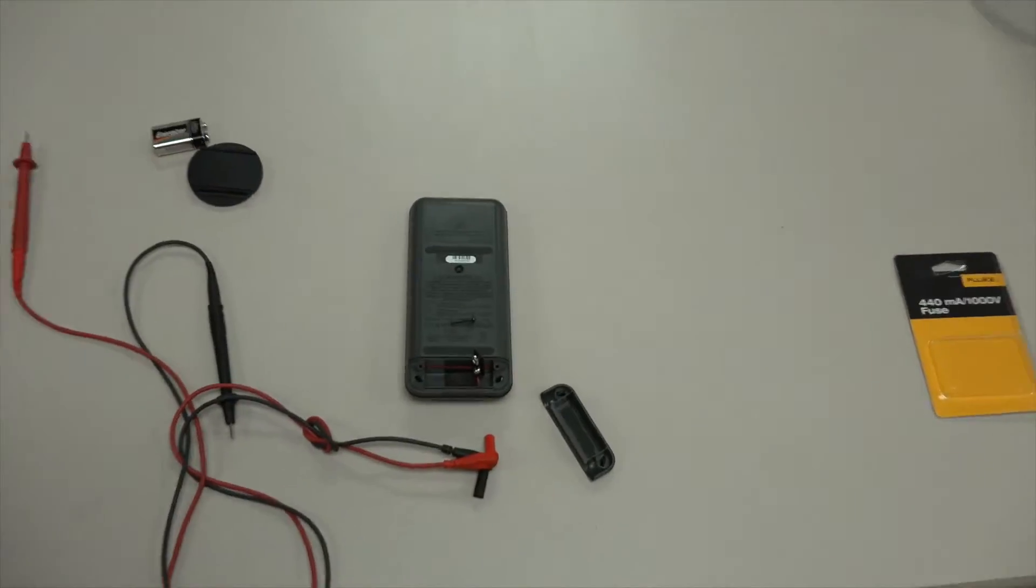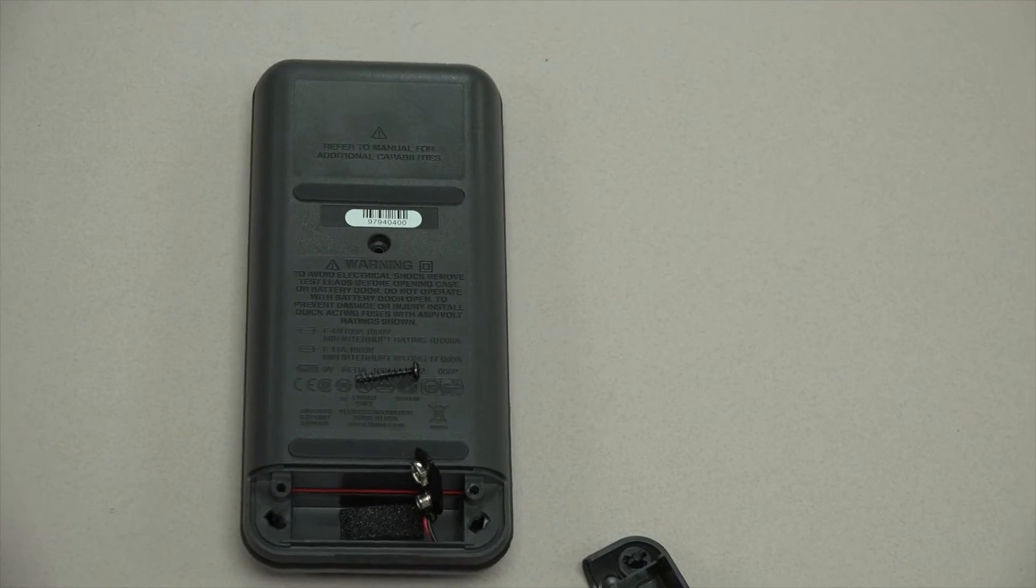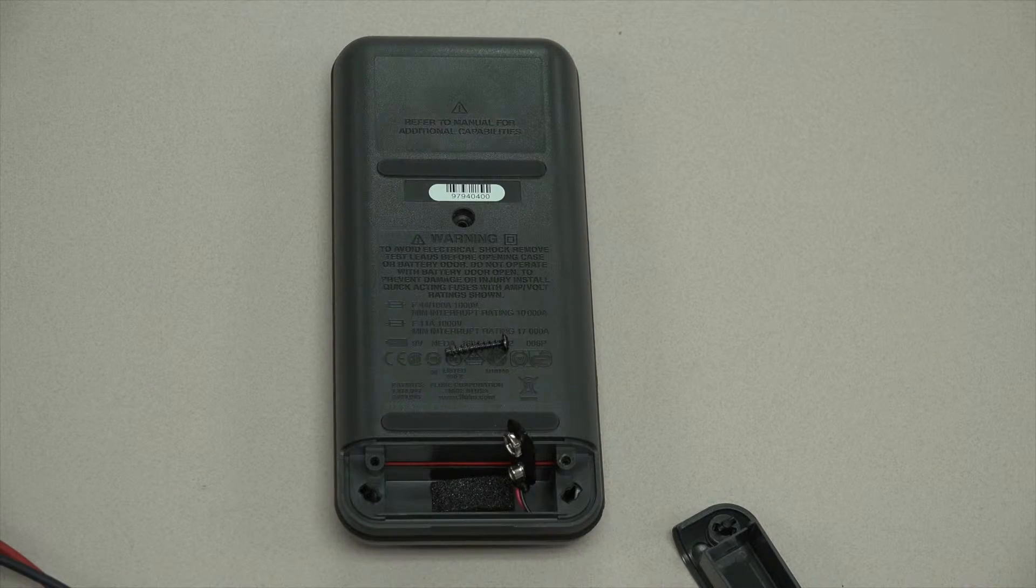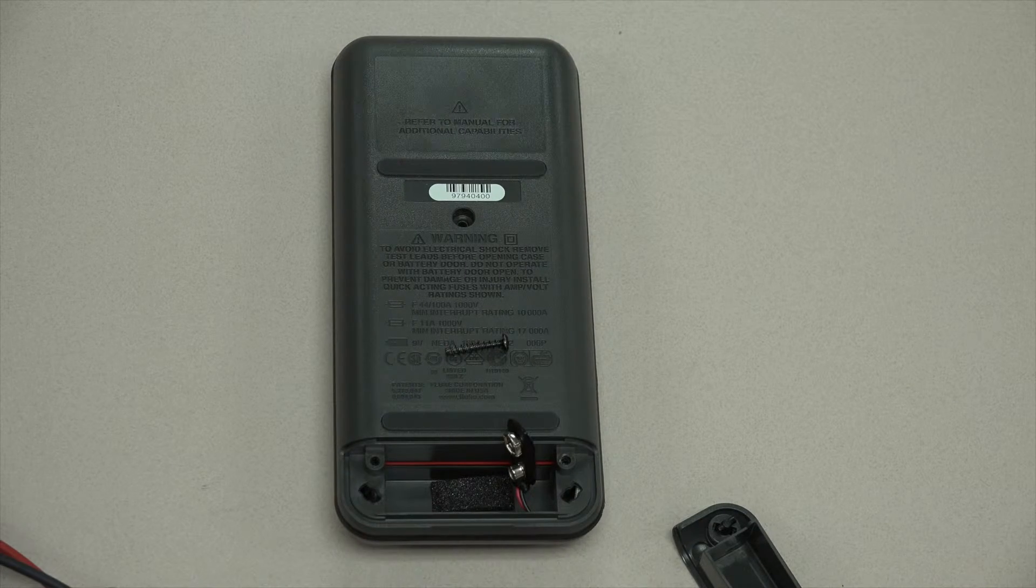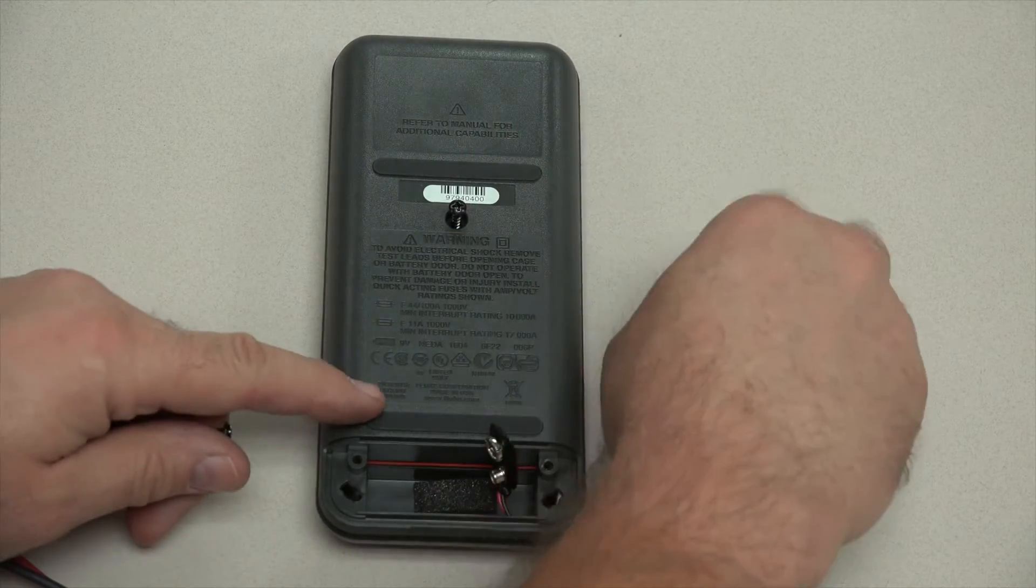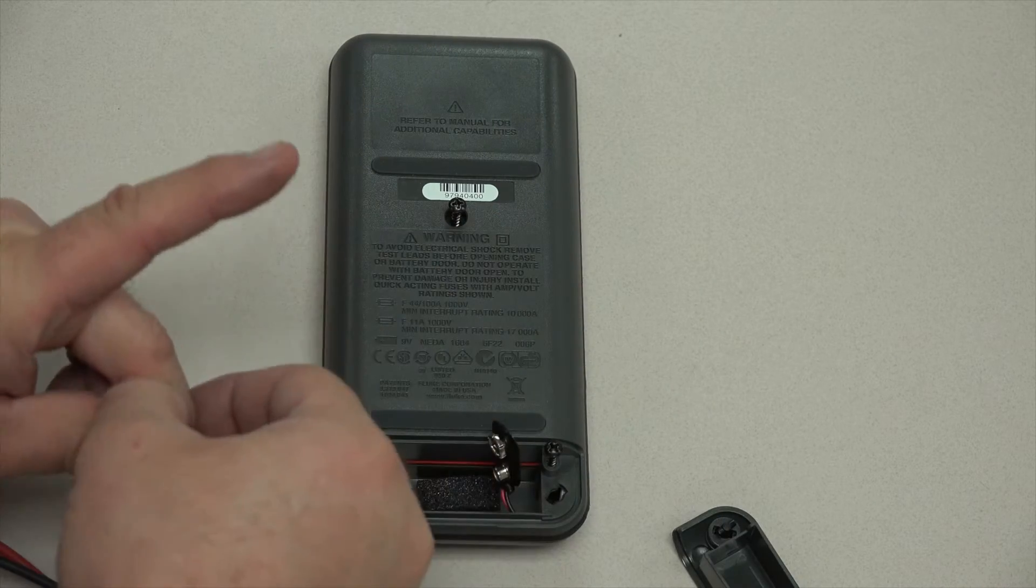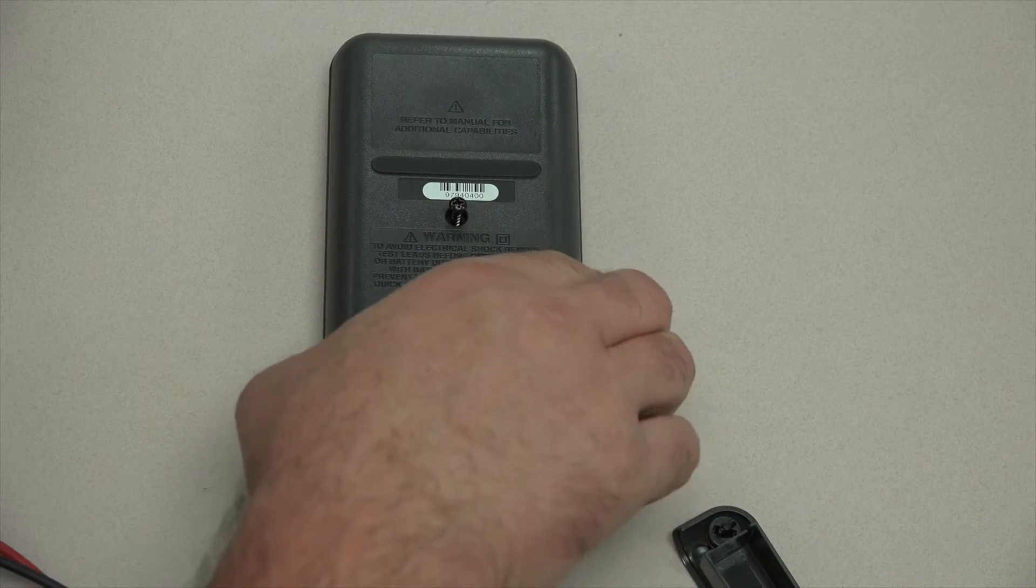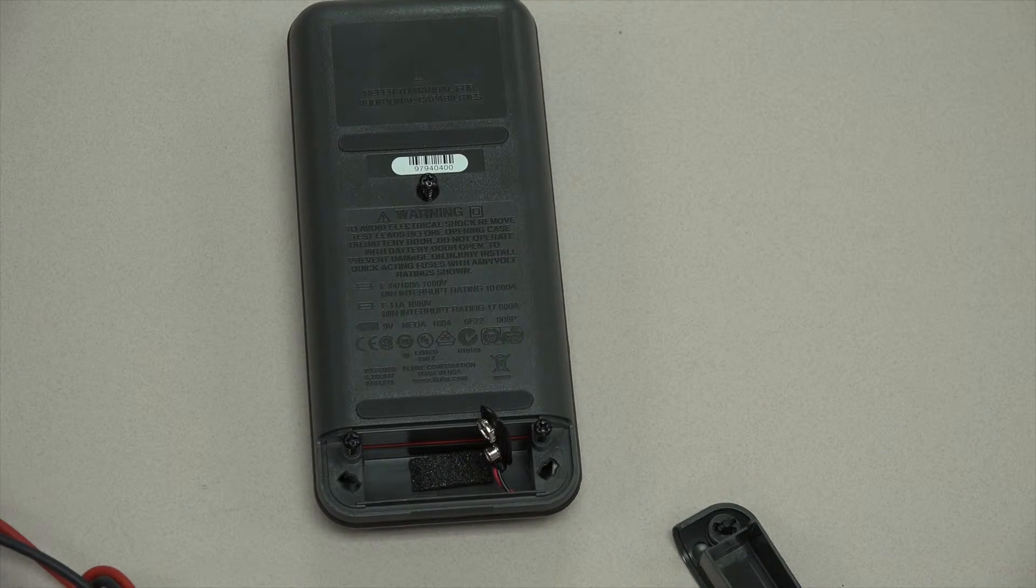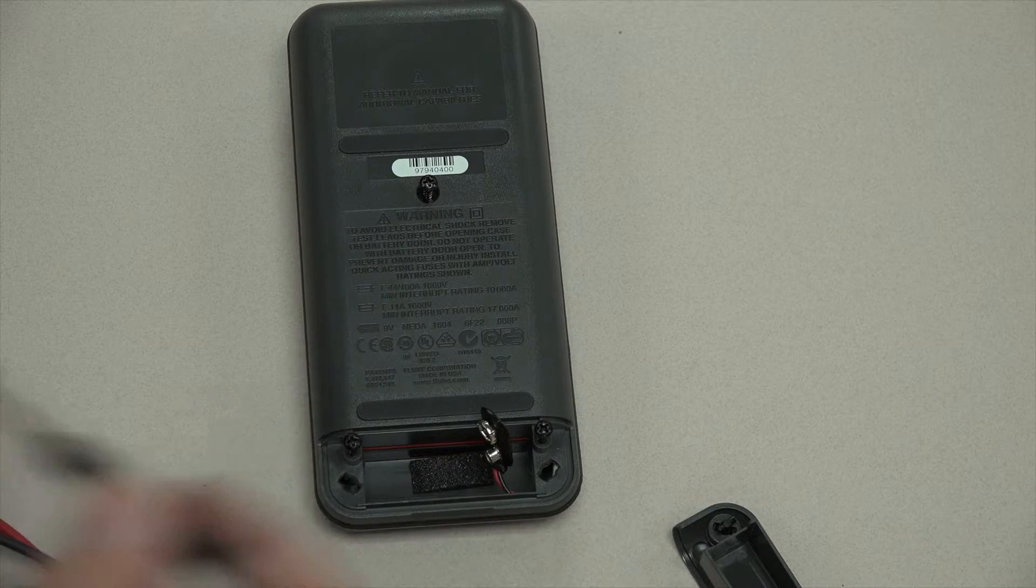So one of the things that I like to do as I'm putting these in, and again, this applies to dashboard screws that are going into plastic. I like to place the screw where it's supposed to go, and instead of just starting to screw it in directly, what I like to do is to go counter-clockwise with it until it kind of rises up and it falls back into place.